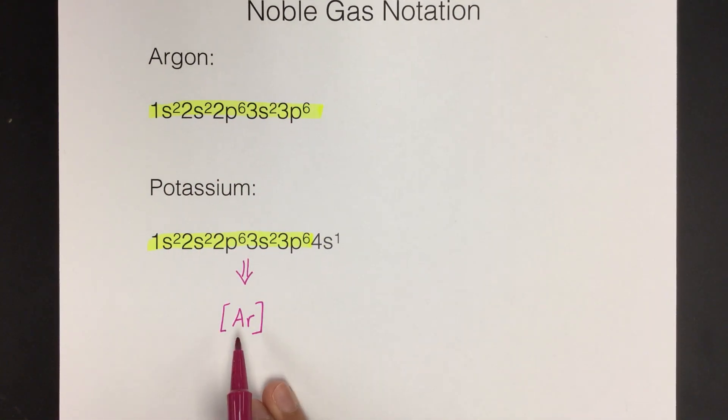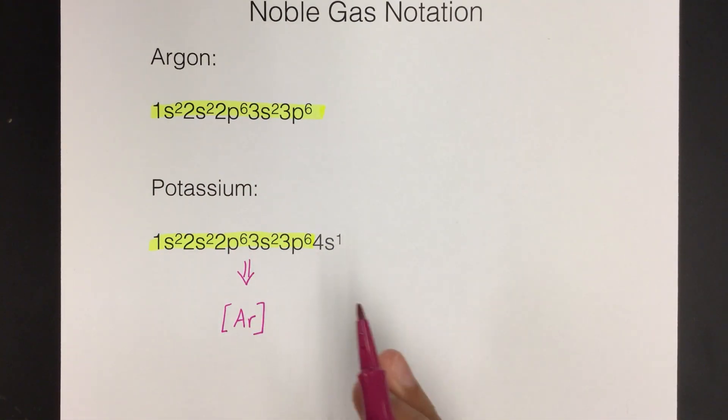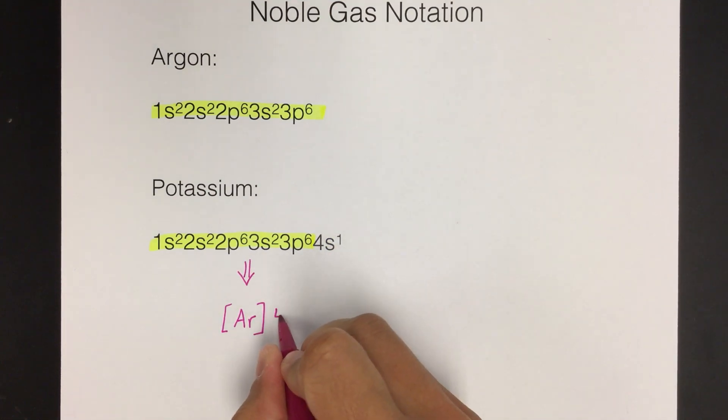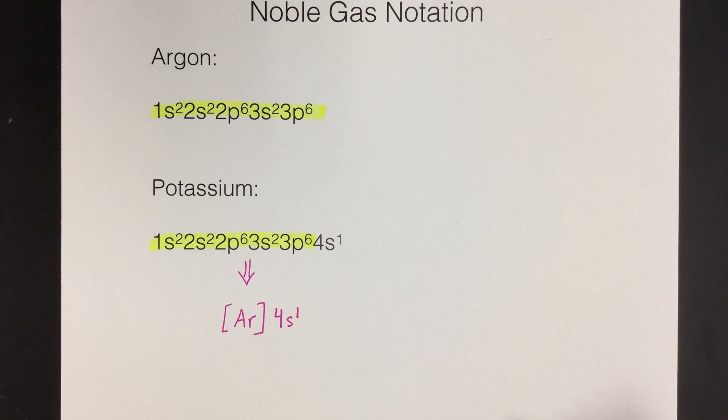And so since argon in brackets represents that, all that's left for us is to write 4s1. And now that is the electron configuration in noble gas notation for potassium. Much, much easier.